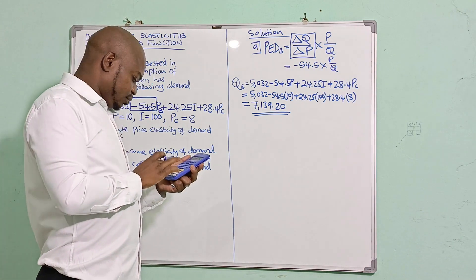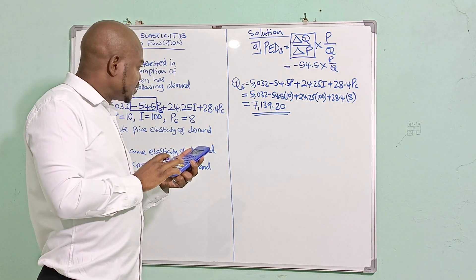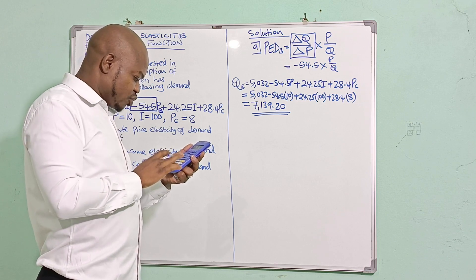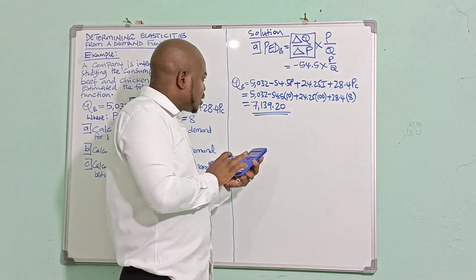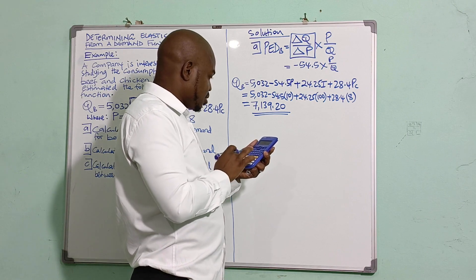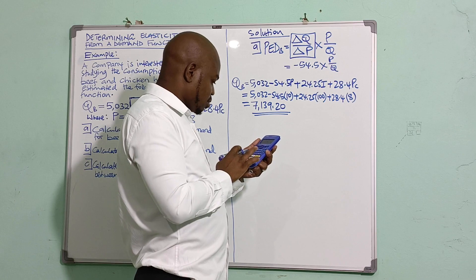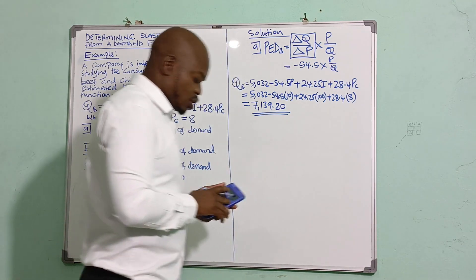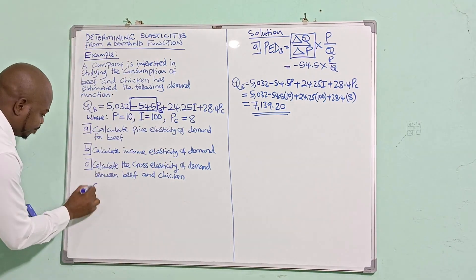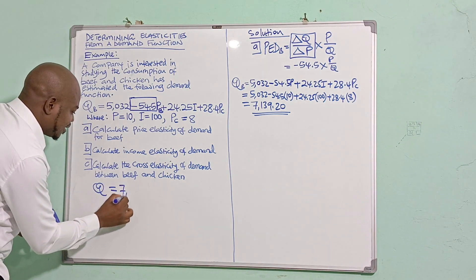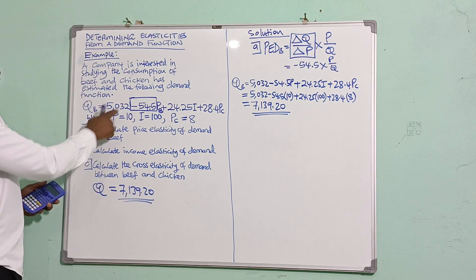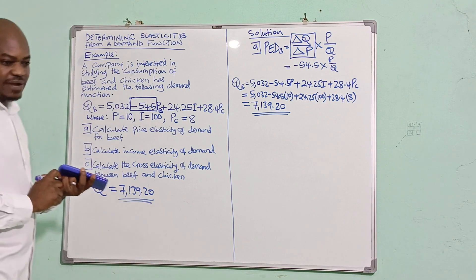So 7139.20 is the answer for quantity, derived from the demand function by substituting all given values. Our Q is now 7139.20, and we can proceed to calculate the price elasticity of demand for beef.